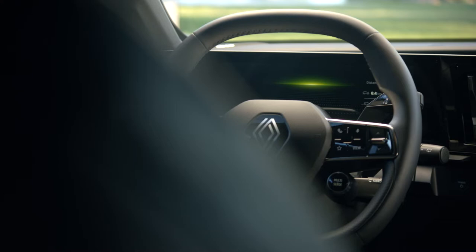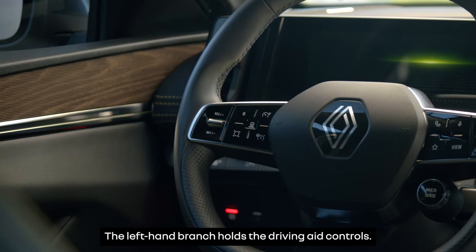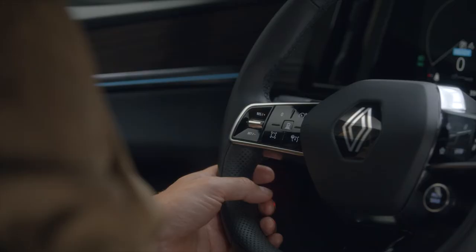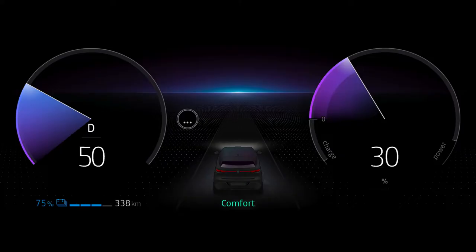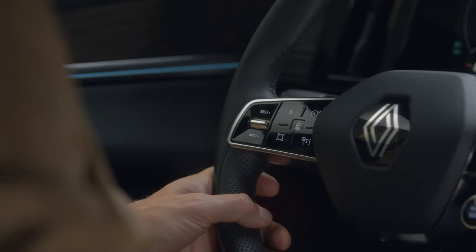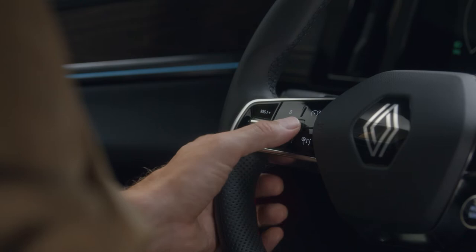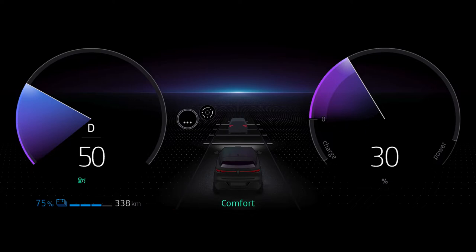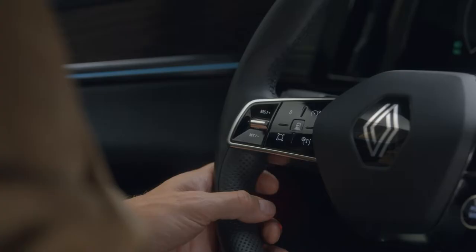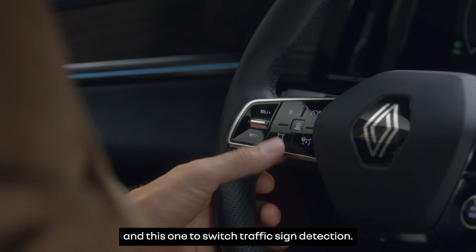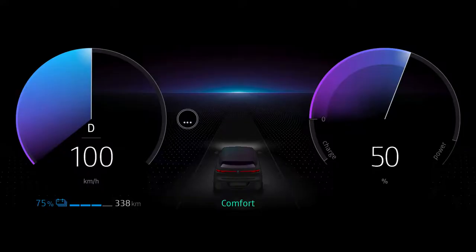All of your vehicle's main controls are on the multi-function steering wheel. The left-hand branch holds the driving aid controls. Use this button to switch the speed limiter on or off. Press this switch to turn the cruise control or adaptive cruise control on and off. Use this button to set a following distance, and this one to switch traffic sign detection.